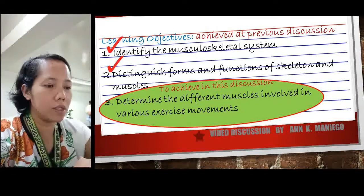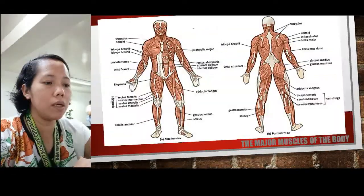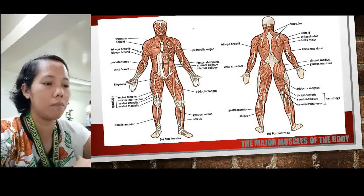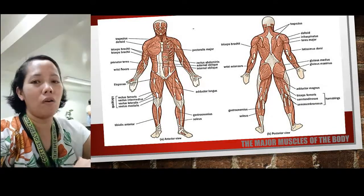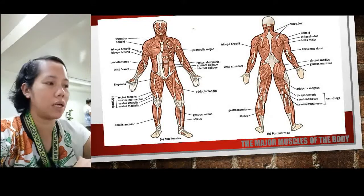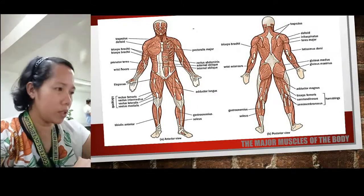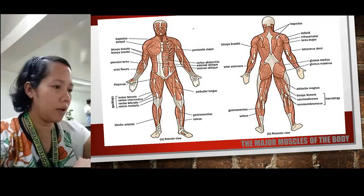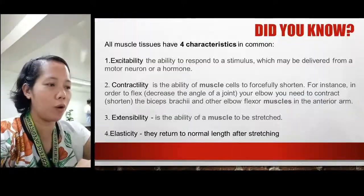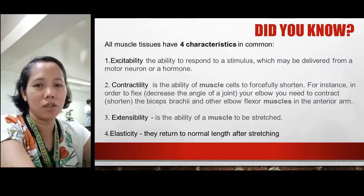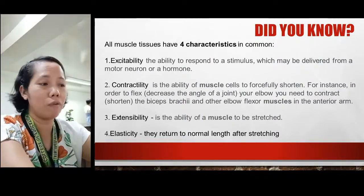So since we are in the muscular system, we will be mentioning the major muscles of the body as we progress with the discussion. Before we proceed, here is something you need to know about the characteristics of the muscle tissues. There are four.